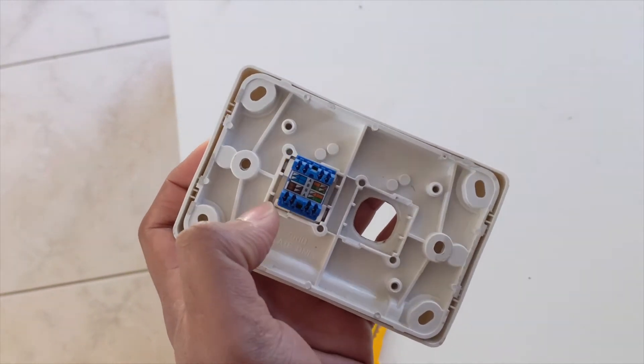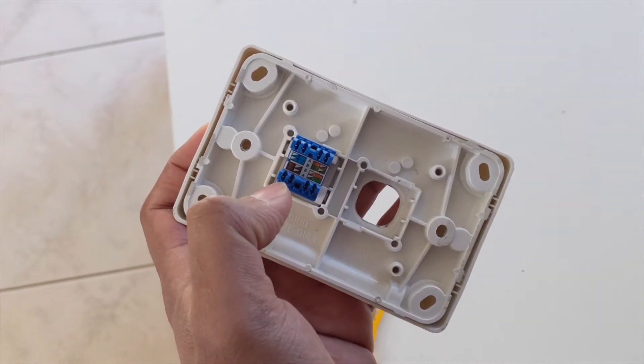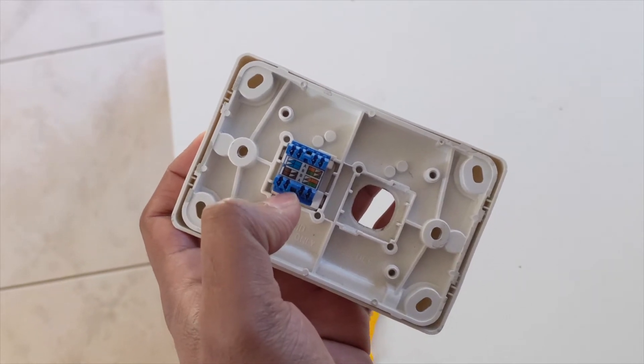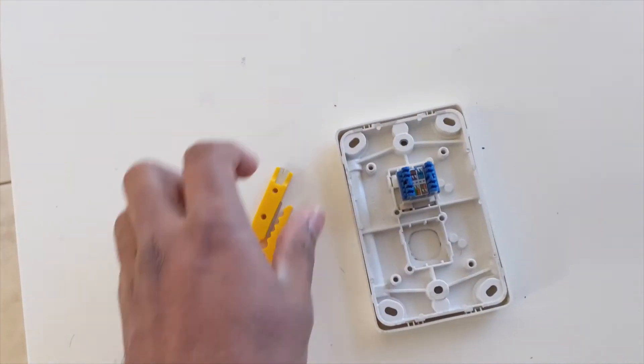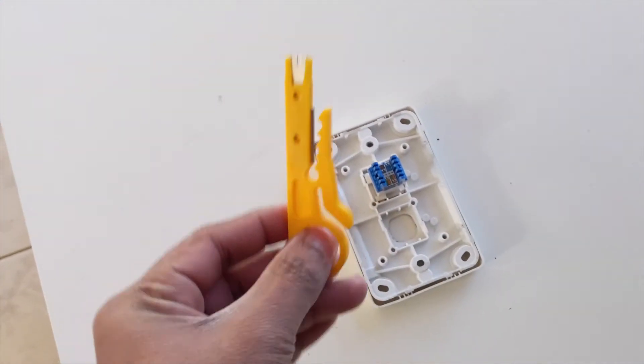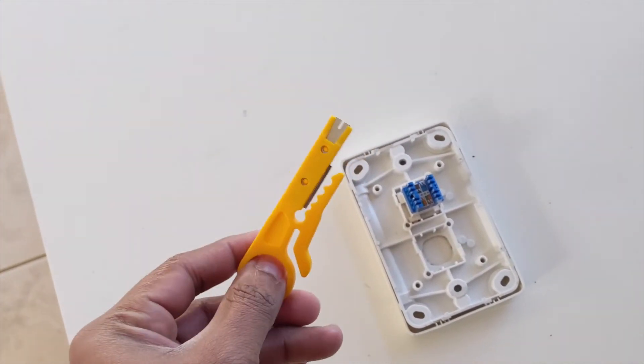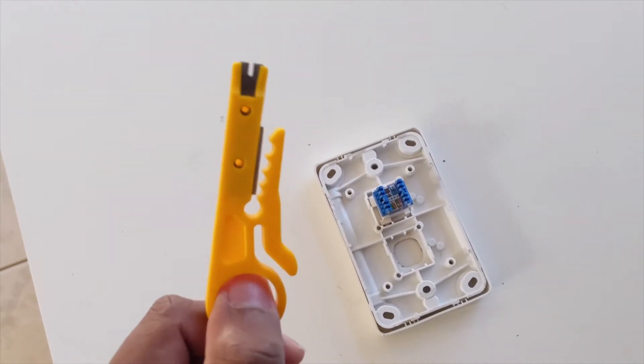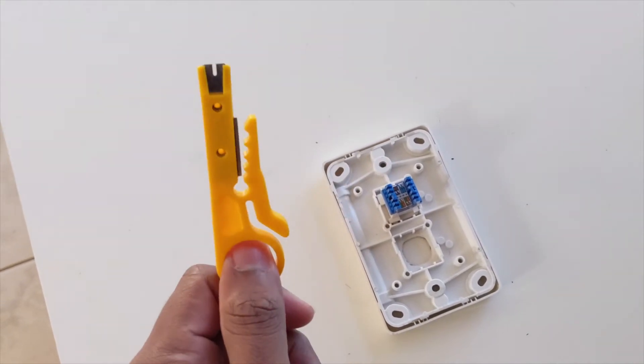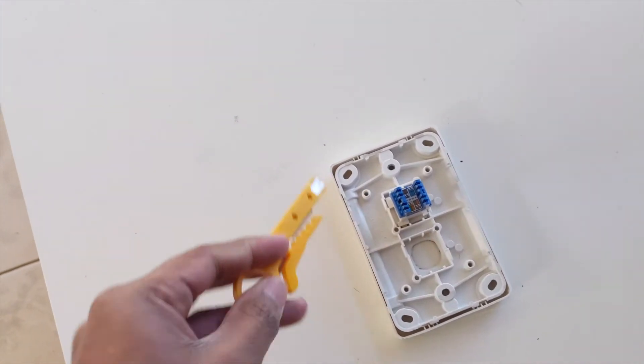Keep the corresponding wires in each of these sockets. You'll receive this kind of punch-down tool when you buy an Ethernet wall socket.